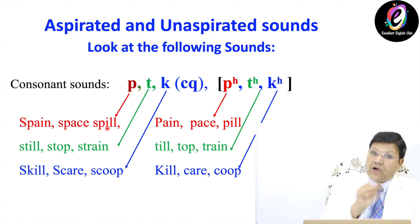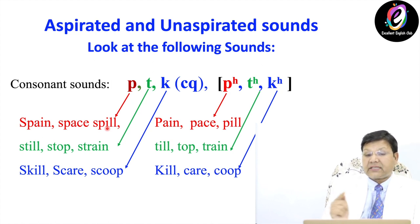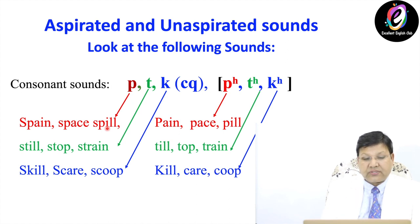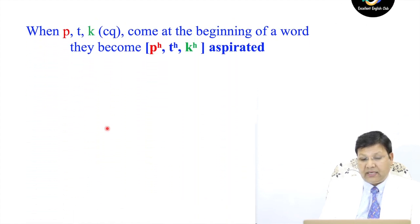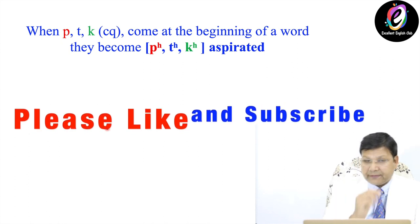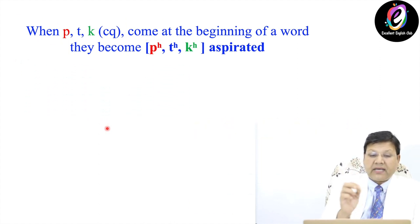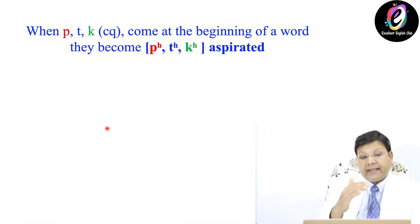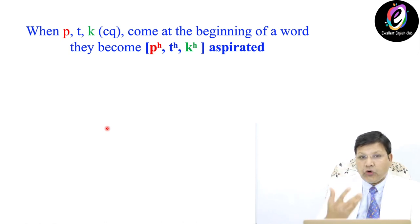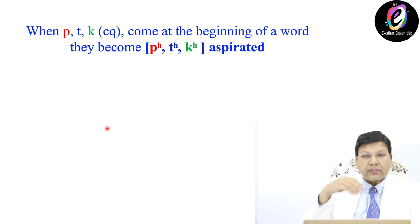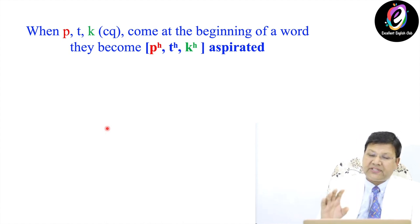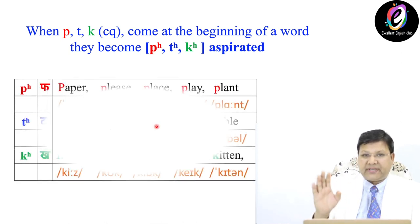So when Pa, Ta, Ka or CQ come at the beginning of a word — at the start — like Pa, pan, pain, Ta, Ka sound — these letters are coming at the beginning, the word is starting with them. If Pa, Ta, Ka come at the beginning of a word, they become Pha, Tha, Kha — aspirated. If you give extra force, extra air to produce Pa, Ta, Ka, that is aspirated. If you don't give extra air, these are unaspirated sounds.